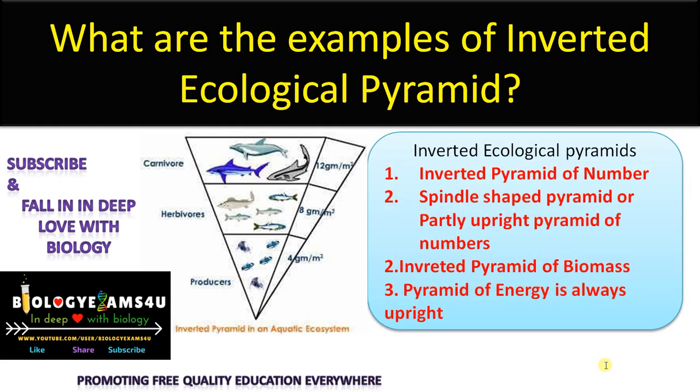The inverted ecological pyramids are: inverted pyramid of number, spindle-shaped pyramid of number, and inverted pyramid of biomass. Remember, pyramid of energy is always upright.